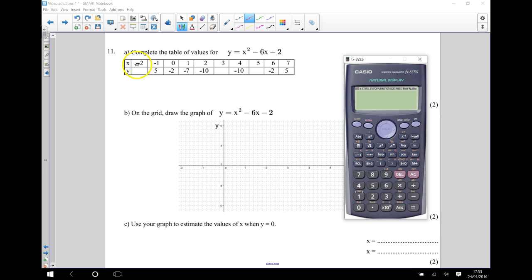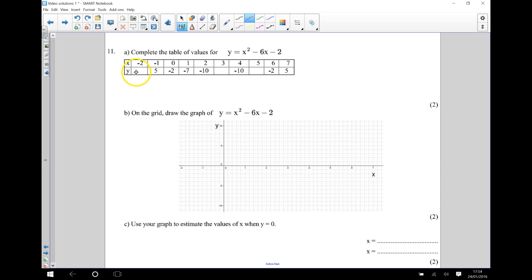So for this particular point here, the x coordinate is negative 2. So I want to do negative 2 squared. So remember it's a negative number, so I'm going to put it into brackets. Negative 2 squared take away 6 times negative 2. Take away 6 times 3, take away 2. And that gives me 14. So I'm going to write the number 14 in here.